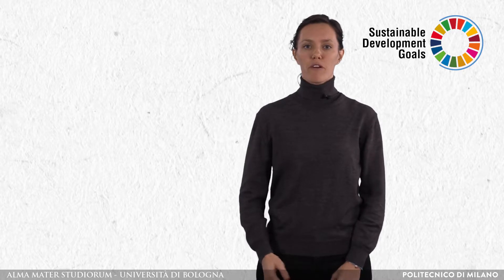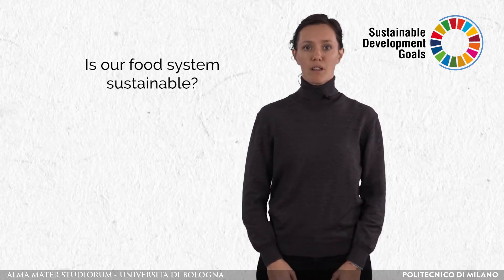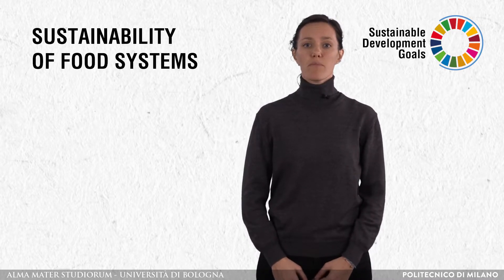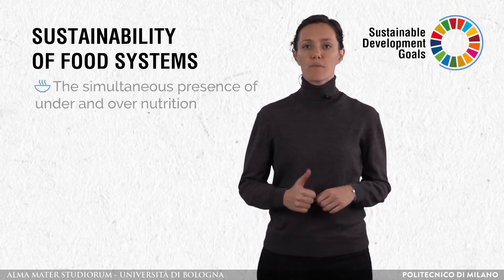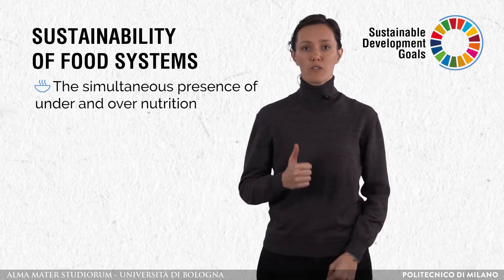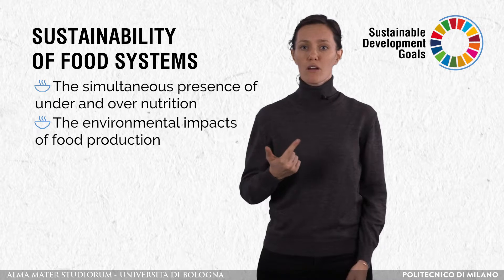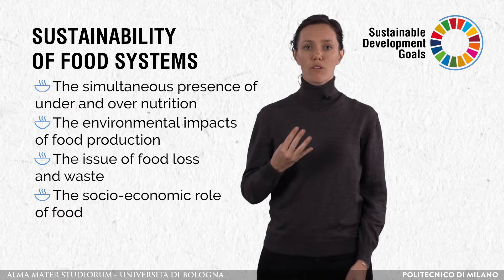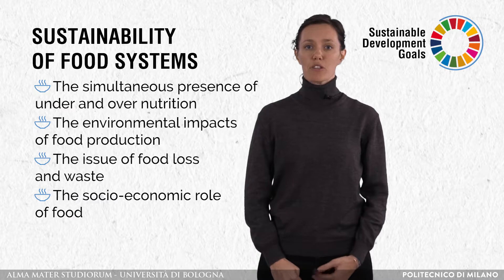Going back to our first question, is our current food system sustainable? Under a global perspective, the trends in the sustainability of food systems can be summarized into four main points or paradoxes: first, the simultaneous presence of under- and over-nutrition; second, the environmental impact of food production; third, the issue of food loss and waste; and fourth, the socio-economic role of food. I will now go deeper into each of these four points and present them under the lens of SDGs.